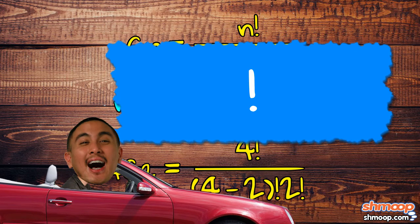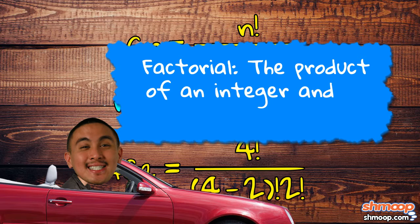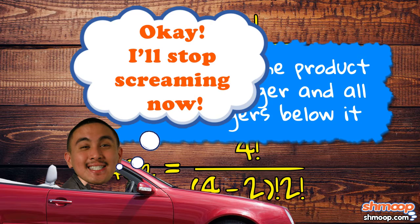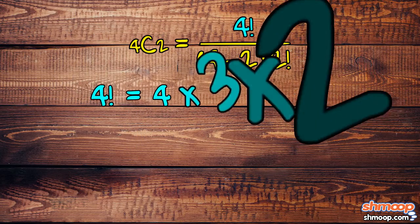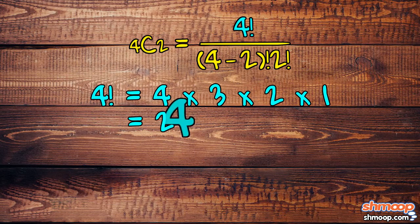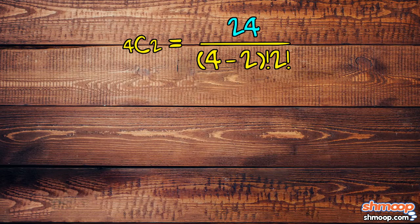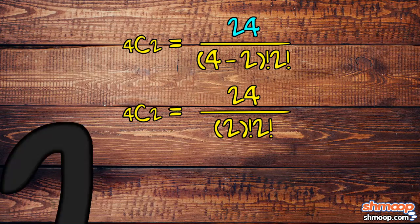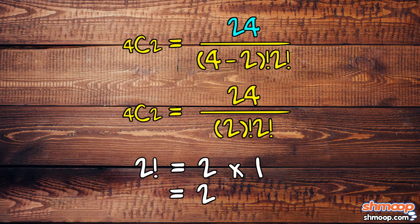Remember, that exclamation mark represents factorial, or the product of an integer and all the integers below it. 4 factorial equals 4 times 3 times 2 times 1, which equals 24. Now let's work with the bottom: 4 minus 2 is 2. 2 factorial is 2 times 1, which is just 2.